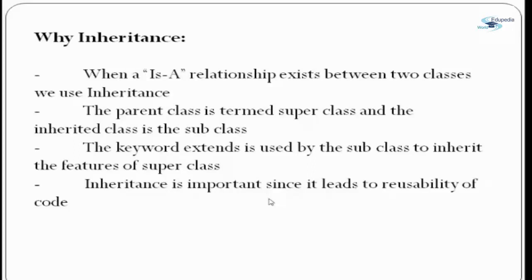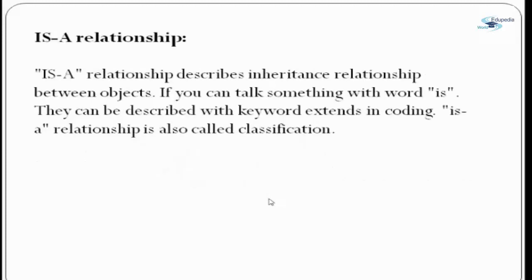In parent classes termed superclass and inherited classes termed subclass, the keyword 'extends' is used by subclass to inherit the features of superclass. Inheritance is important since it leads to reusability of code. The IS-A relationship describes the inheritance relationship between objects. We say dog extends animal and cat extends animal, where dog, cat, and animal are classes. Animal is a superclass and dog and cat are subclasses.